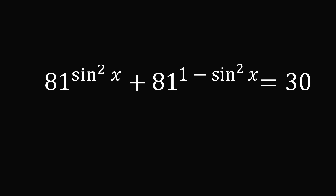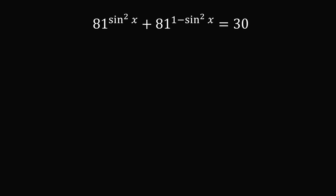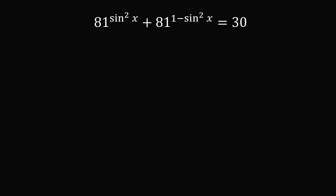But let's further simplify this. Let's let u be equal to sine squared x. So the equation is then 81 to the power of u plus 81 to the power of 1 minus u is equal to 30.